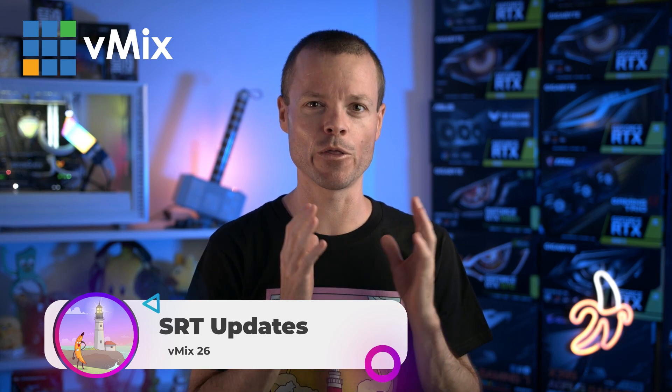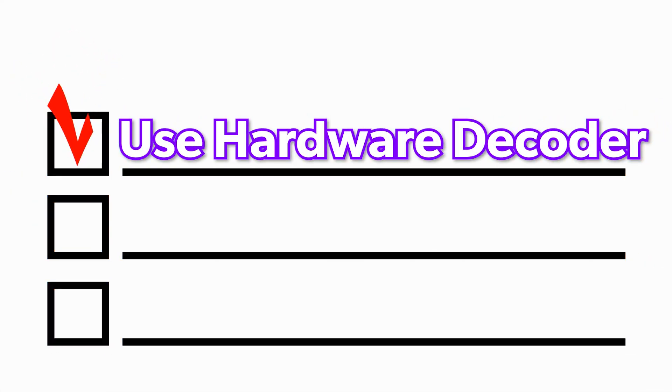Maybe SRT is really your thing. Well, we've added multi-track audio support for both inputs and outputs in vMix 26. You can also now use SRT with instant replay, but make sure to uncheck 'use hardware decoder' when adding the SRT input, as instant replay uses just the CPU.